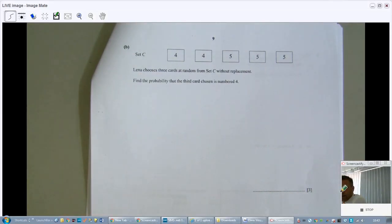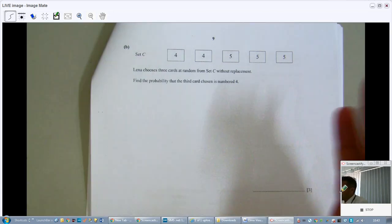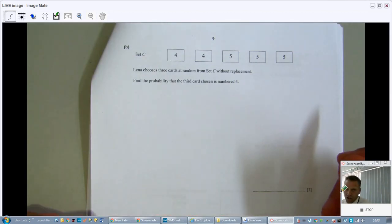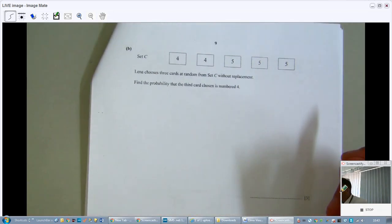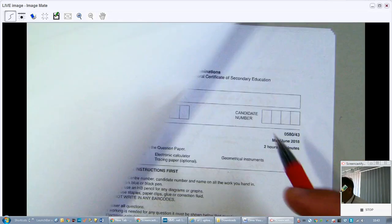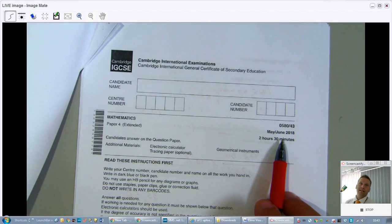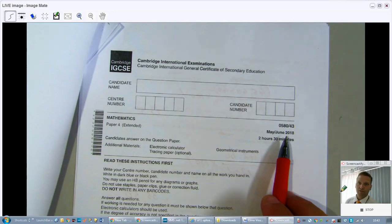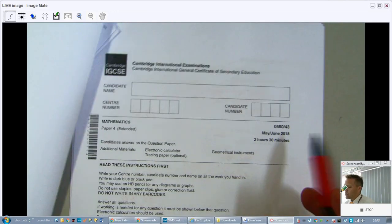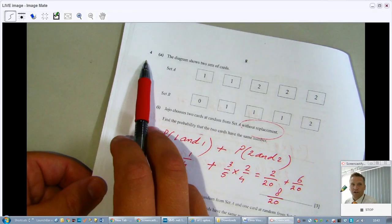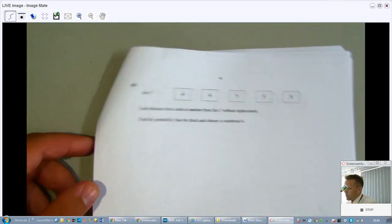Welcome back to this video part 3. I'm not sure what happened at the end of the last part but all of a sudden it stopped, so we'll just continue from here. We're still doing Paper 43 May June 2018. I'm Mr. John from ExplainingMaths.com. The previous questions we've done in the previous part. At the moment we're doing question 4 but we still have one question left.